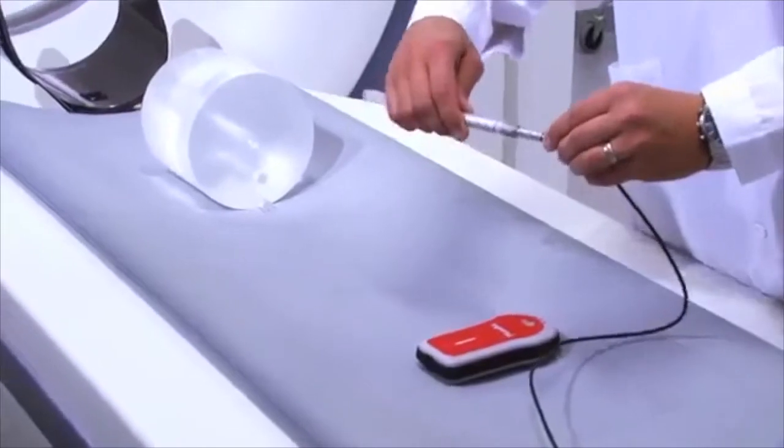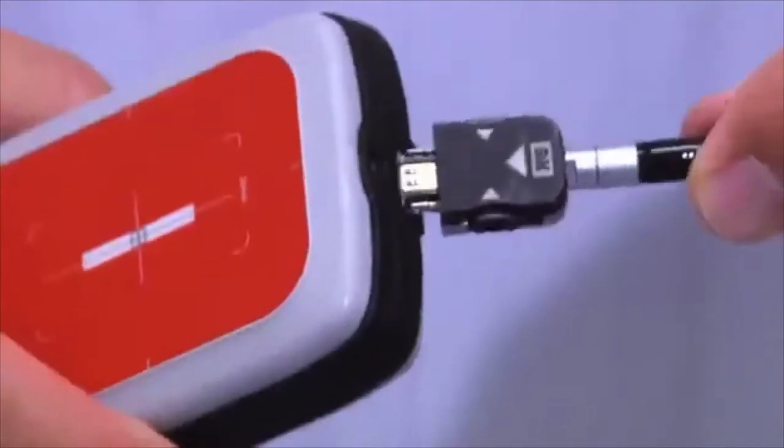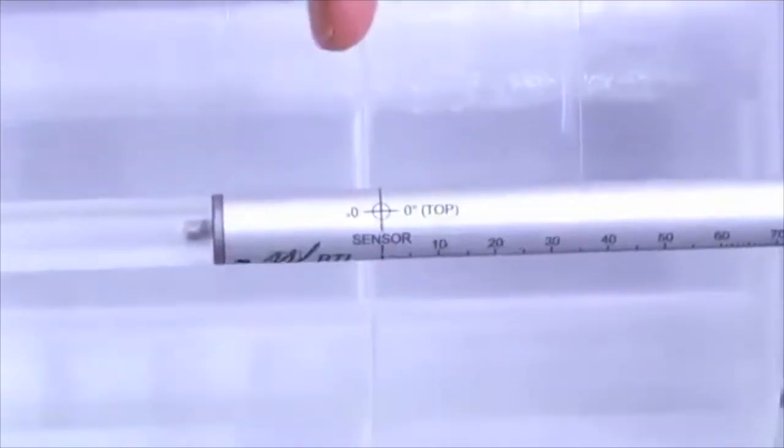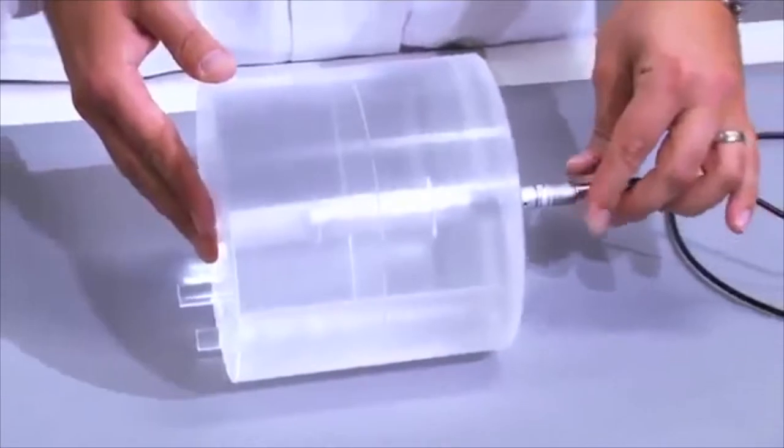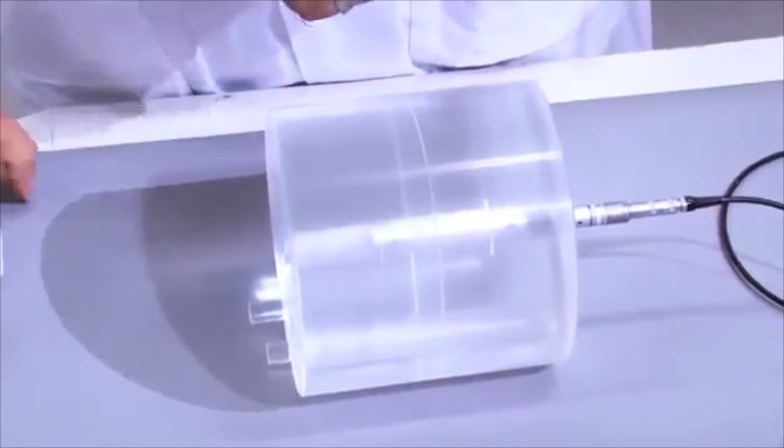First, we have to set up the phantom and insert the detector. The detector should be placed in the central hole and the detector sensor should be centered. Make sure that the detector doesn't move during the exposure. This can be done by fixing it with some tape, for example.